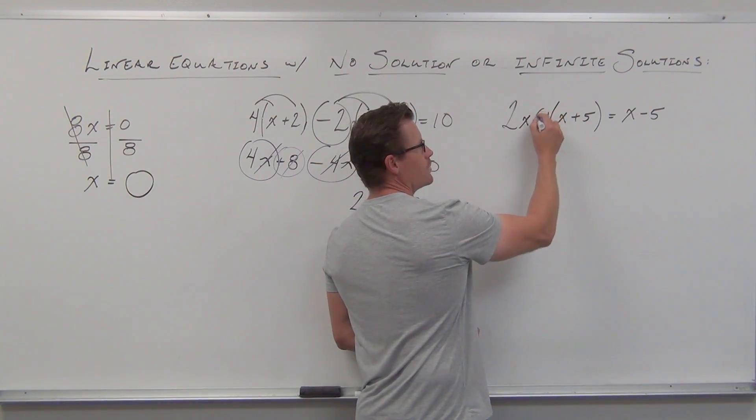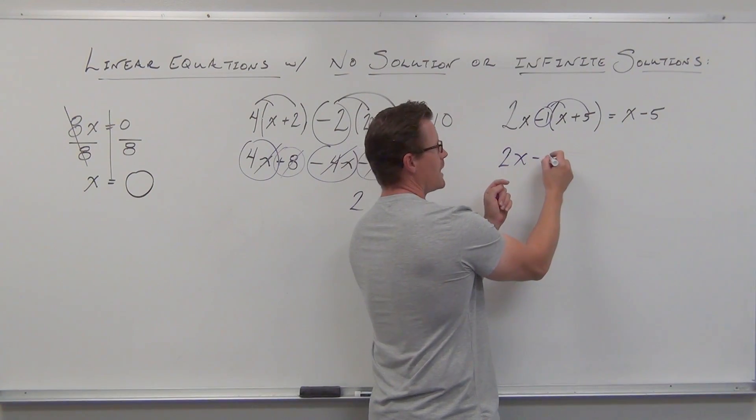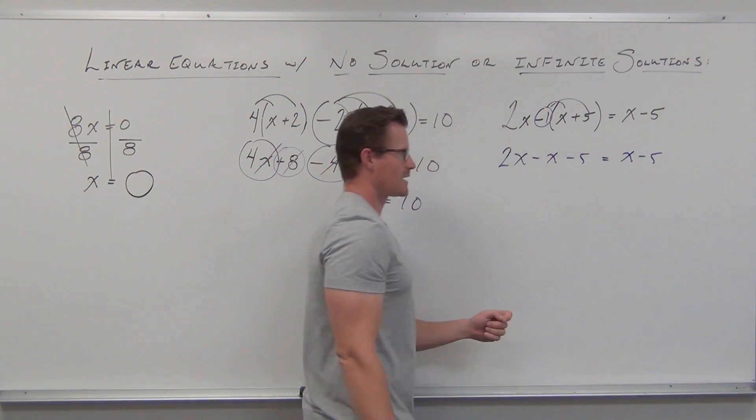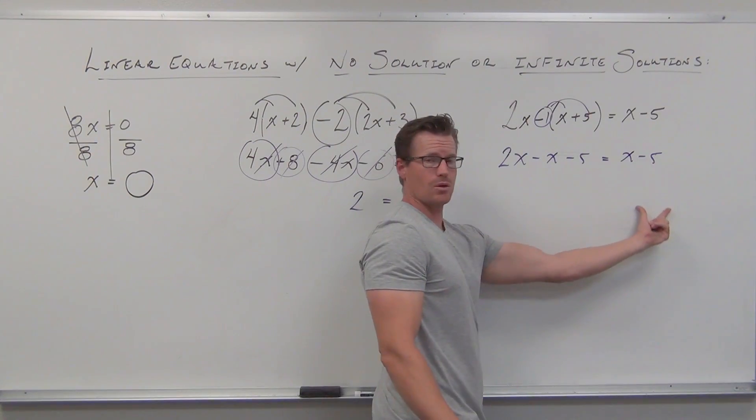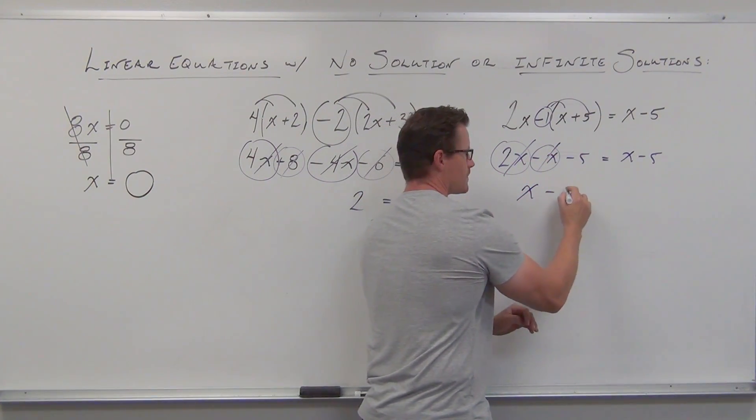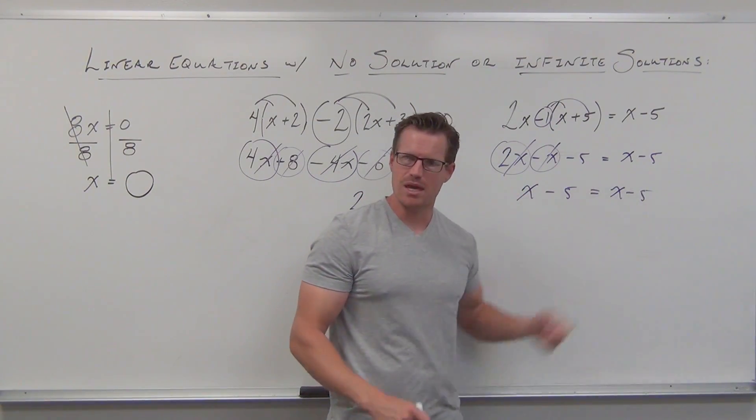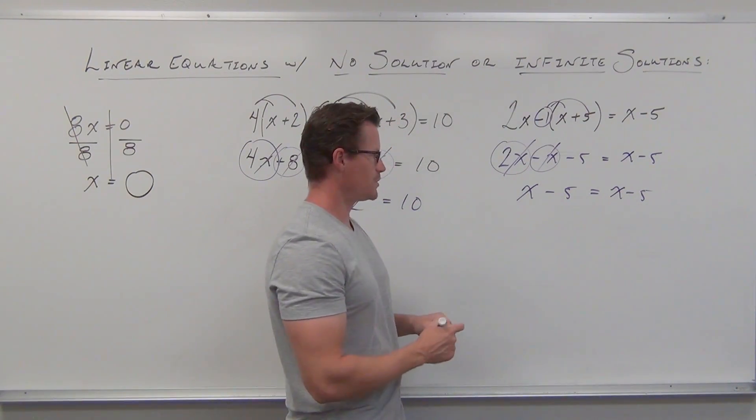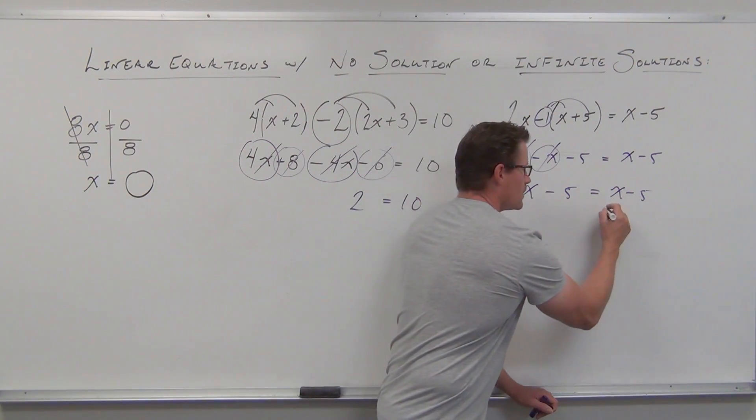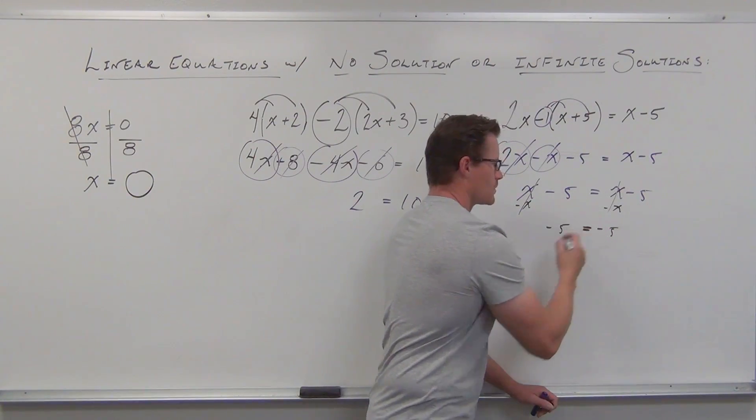Do the other one. We check out our linear equation. We know we've got to distribute first. No problem. Leave your 2x, get your minus x minus 5 by distribution. On the right-hand side, we get x minus 5. Let's combine some like terms. We've got a 2x and a minus x. That gives us x minus 5. Dude, that's weird too. If ever you get the same exact thing on both sides of your equation, something's a little fishy here. Let's subtract x. You subtract x and you get negative 5 equals negative 5.